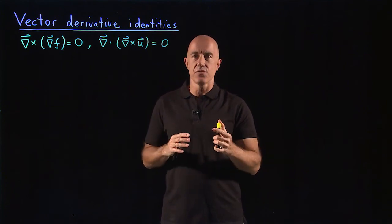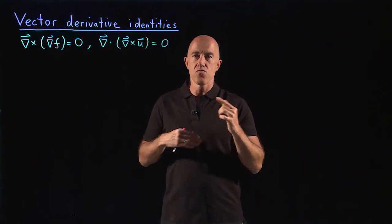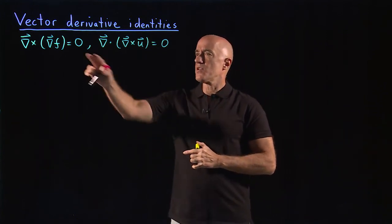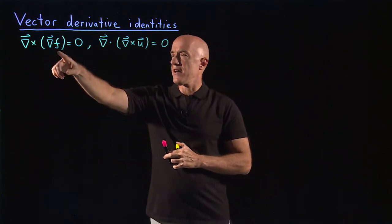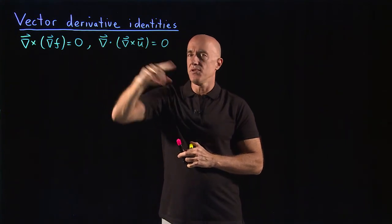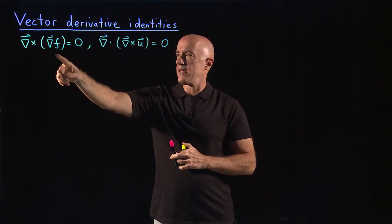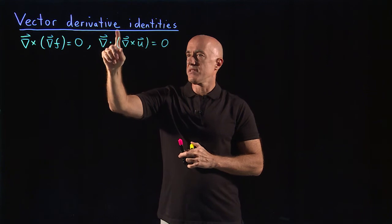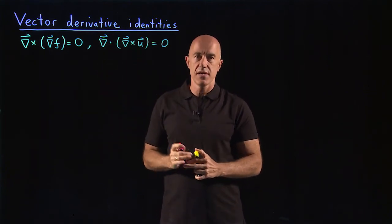Here I just want to show you the equations and read them to you so you know what they are. The first two we already derived: del cross del f equals zero, and del dot del cross u equals zero. This is the curl of a gradient of a function equals zero, and this is the divergence of the curl of a function equals zero.